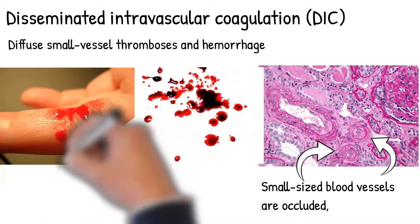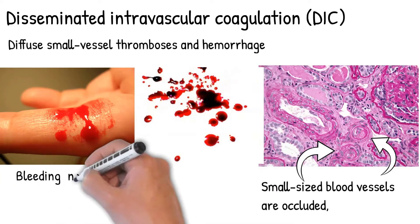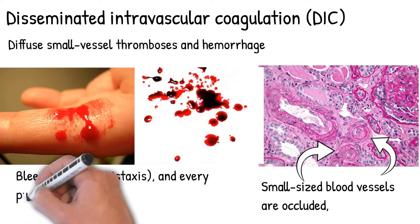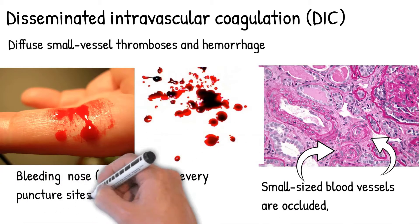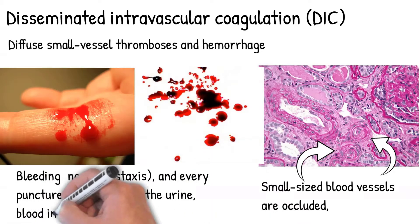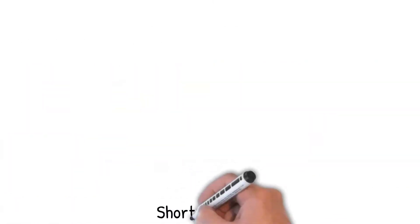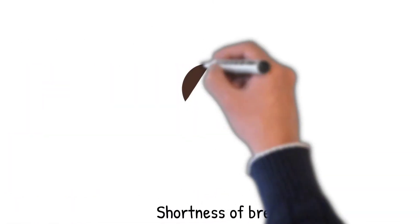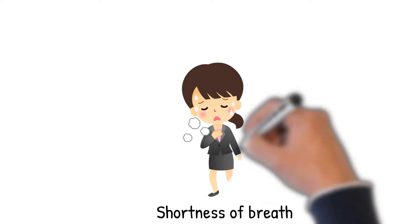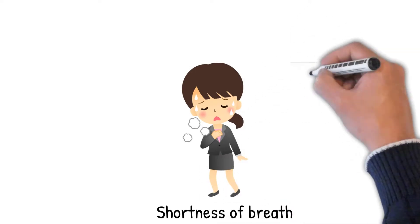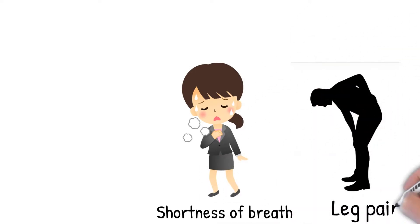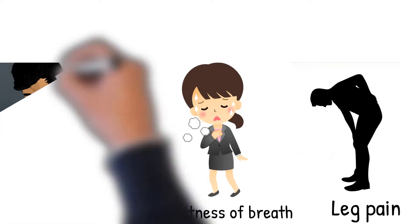Bleeding occurs from the GI tract, nose (epistaxis), and every puncture site, and may result in normocytic anemia. Blood in the urine and blood in the stool may also occur. Symptoms may include shortness of breath, chest pain, leg pain, problems moving parts of the body, and some cognitive problems.